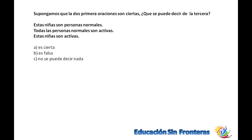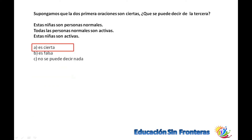Supongamos que las dos primeras oraciones son ciertas. ¿Qué se puede decir de la tercera? Dice: estas niñas son personas normales. Todas las personas normales son activas. Entonces ya se cae la mata: es cierta, todas las niñas son activas, si estas niñas son personas normales.